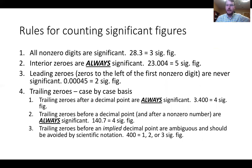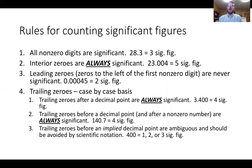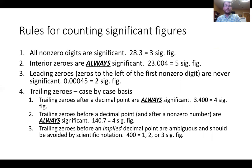Rule 1: all non-zero digits are significant—in 28.3 there are three significant figures. Rule 2: interior zeros are always significant—in 23.004, those zeros are significant because they're between two non-zero numbers. Rule 3: leading zeros help hold the decimal place but are not significant—0.00045 has only two significant figures. You must include the leading zero before the decimal point.